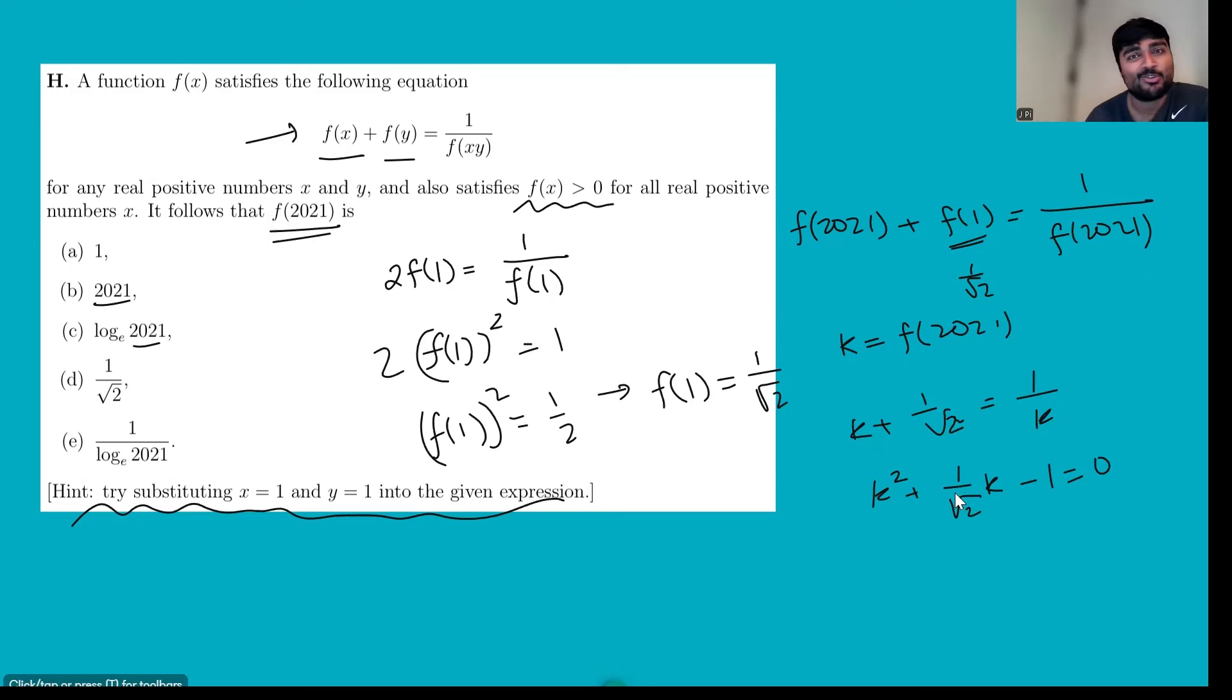Now we've just turned this into a quadratic equation, so we can use the quadratic formula. The quadratic formula tells us that k is going to be minus 1 over root 2 plus or minus the square root of b squared. So 1 over root 2 squared is a half minus 4ac, so minus 4 times 1 times minus 1 all over 2 times 1.